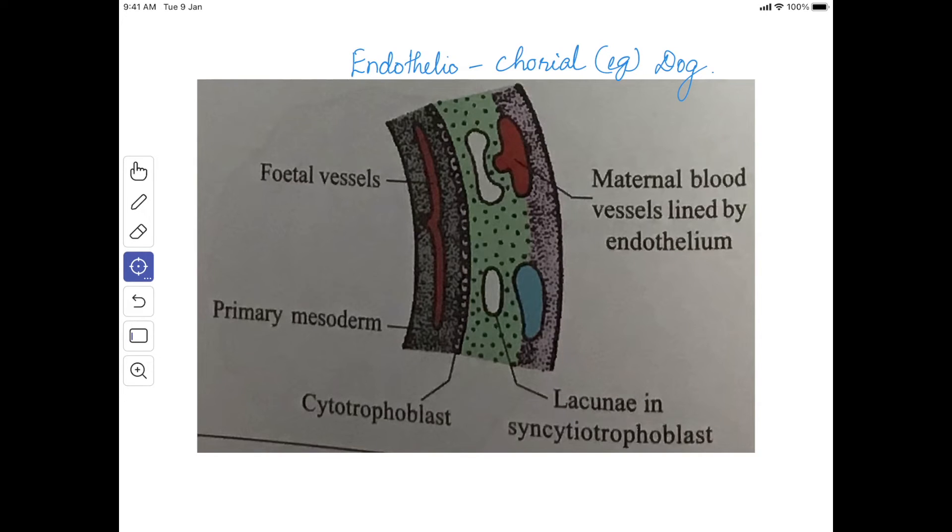The next type is endothelial chorial which is found in dogs. The fetal chorion erodes the endometrial stroma up to the endothelium of the maternal vessels.